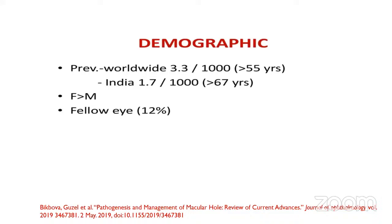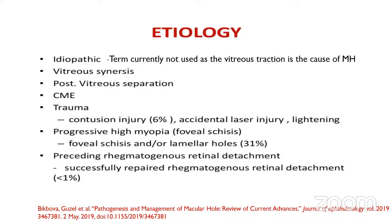Demography worldwide is 3.3%, and it occurs in patients basically more than 55 years of age. In India, incidence is 1.7 per thousand, age group of more than 67 years. Females are affected more than males, and the fellow eye can be involved in 12% of cases. Etiology: it can be idiopathic, vitreous syneresis, post-vitreous separation, cystoid macular edema, trauma, progressive high myopia related to foveal schisis, and preceding rhegmatogenous retinal detachment.